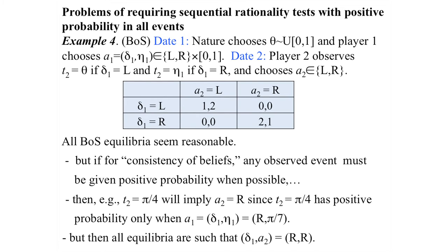This is a battle-of-the-sexes game between players one and two, each choosing left or right. Left-left is player two's favorite coordination outcome, right-right is player one's favorite. The twist is that player two observes a number before choosing — either nature's number or player one's number — but it's payoff irrelevant. Payoffs depend only on the left-right choices.